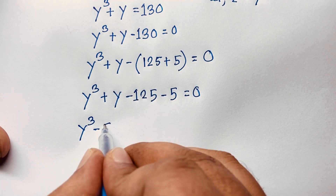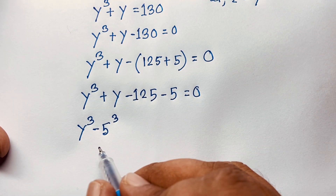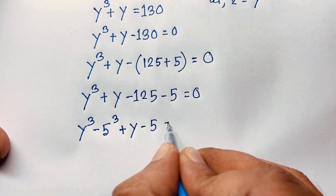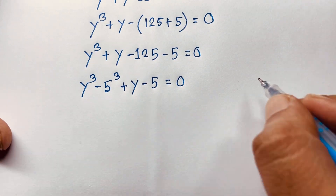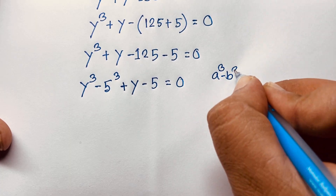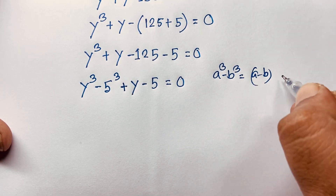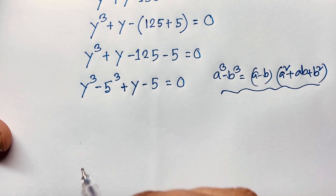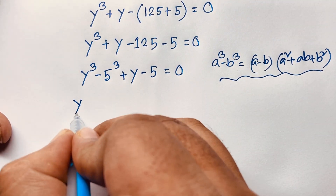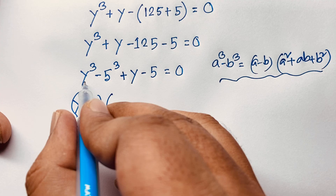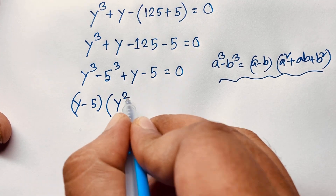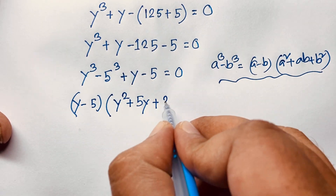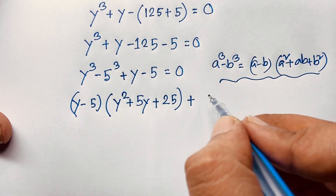Since 5 times 5 times 5 equals 125, we have 5 to the power 3 = 125. So the equation is y³ − 125 + y − 5 = 0. We know the difference of cubes formula: a³ − b³ = (a − b)(a² + ab + b²). Applying this with a = y and b = 5 gives (y − 5)(y² + 5y + 25) plus (y − 5).